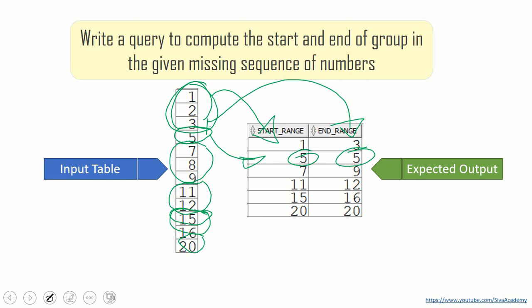So within 7, 8, 9, obviously 7 is the starting value of that group and 9 is the ending value. Similarly from 11 and 12, we need to print 11 as the starting and 12 as the end value. So this is the expectation.